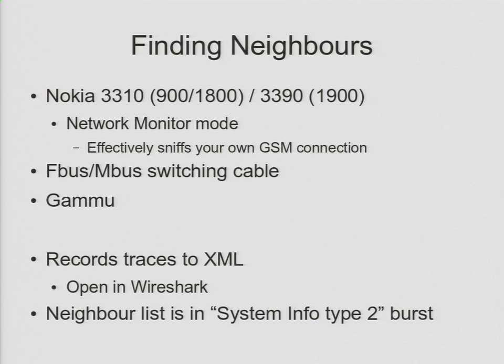Two European bands — the 3390 does at least one of the U.S. bands. What these do is they support a thing called network monitor mode. What network monitor does is it effectively dumps a log of every GSM thing that the cell phone does — every packet that it sends to the base station, every burst that it receives from the base station, everything. Every single thing that that cell phone does gets logged. It doesn't allow you to interact with it or control it beyond what you can do on the handset already, but it does give you very, very detailed insight into what your phone sees on the GSM network.